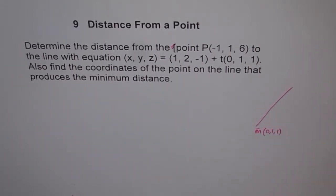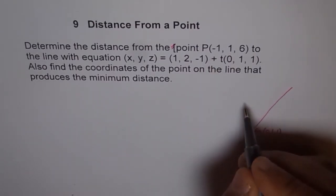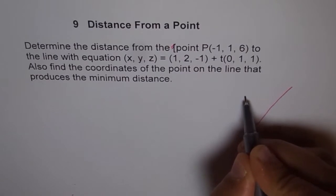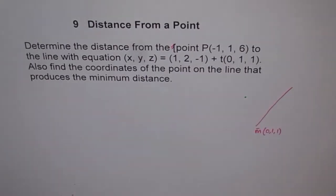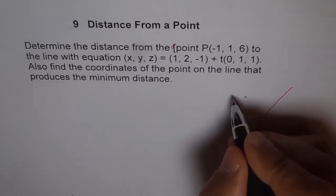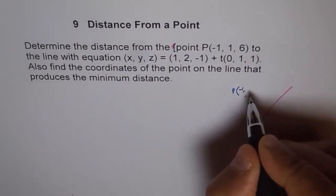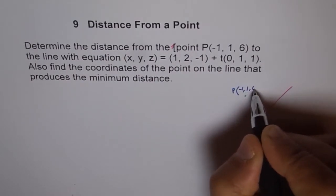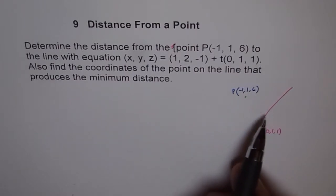A point is given to us. Let's call it P, which is located off the line. The coordinates of the point P are minus 1, 1, and 6. Now, to find the shortest distance, we need to find a point on the line which makes a right angle with the line.